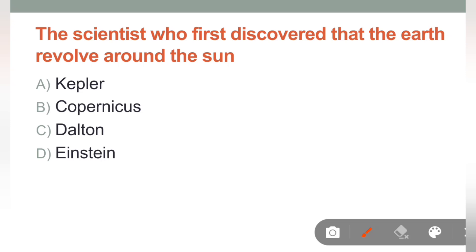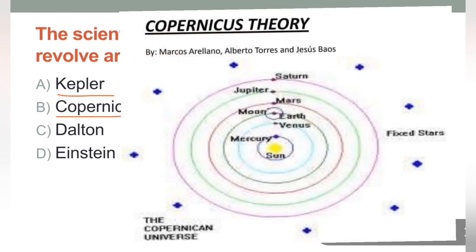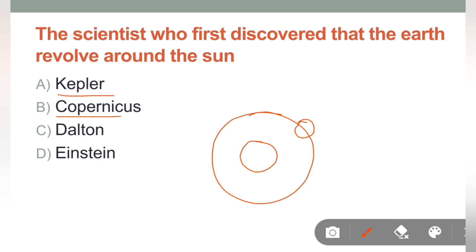Next question is: The scientist who first discovered that the Earth revolves around the sun. In mein se, kis scientist ne hi discovery ki thi that the sun is stable and Earth revolving around its orbit. In this orbit, so iska correct answer kya ho jayega? Aap hamesha Kepler aur Copernicus mein confused ho jate. Toh iska simple trick hai.